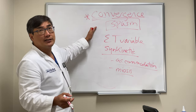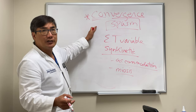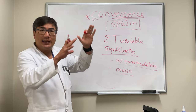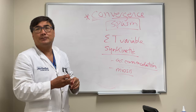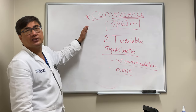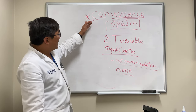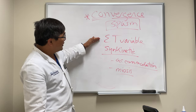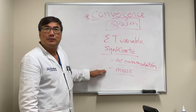Rarely, however, it is associated with organic pathology, and that's going to be at the level of the thalamo-mesencephalic junction. But usually it's a functional vision disorder. The key differentiating features are variable esotropia and miosis of the pupils.